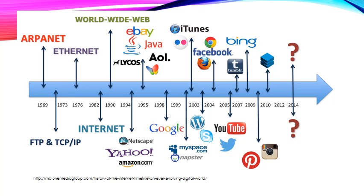Here's a timeline of what's been happening with regards to the internet over the years. Just pause and have a look at how things have changed since 1969 and when the internet came out during the late 1980s.